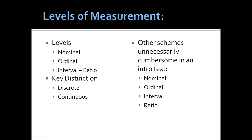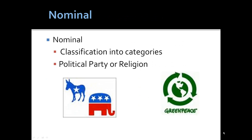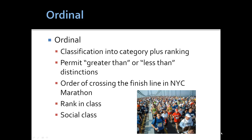The text identifies four levels: nominal, ordinal, interval, and ratio. As a practical matter in an intro text, interval and ratio are often collapsed. Nominal is the classification into categories such as political party, religion, or gender. Ordinal is the classification into a category plus a ranking — it means greater than or less than — such as the order of crossing the finish line, ranking class, or social class to the extent that these are rankings in some logical ordering.